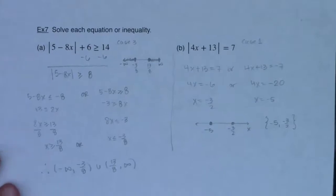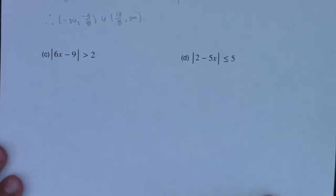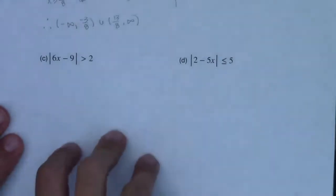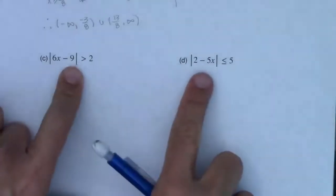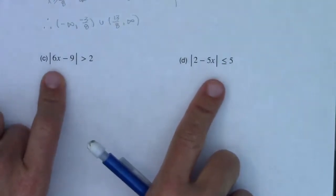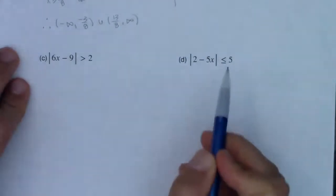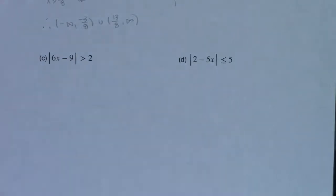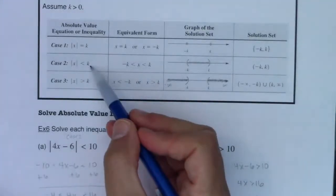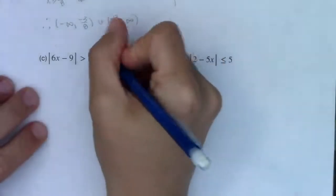Now let's look at examples c and d. The absolute value expressions are already isolated, so that's a good start. Example c has the greater than symbol — that's a Case 3. Example d has the less than or equal to symbol — that's a version of Case 2. Let me note: case 3 and case 2.